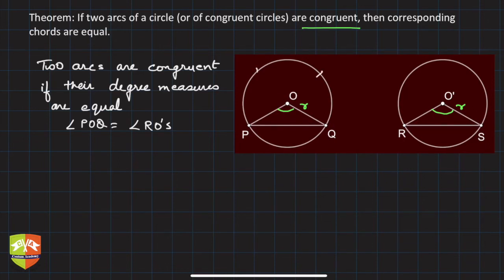Let's say this is P'Q'. If P'Q' also has the same degree measure—if this is theta and this is theta—then we say P'Q' and PQ are congruent. I hope you understood what congruent arcs are.